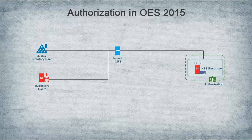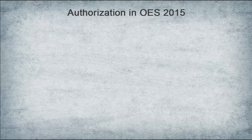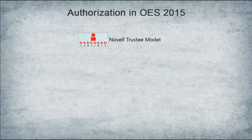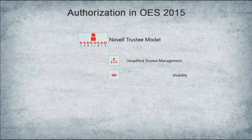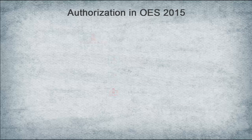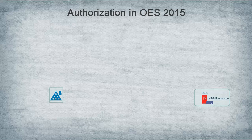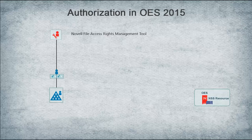OES 2015 support for NSS Active Directory trustees uses the same Novell trustee model that exists for the eDirectory trustees, to leverage features such as simplified trustee management, visibility, and inheritance support. Windows Active Directory administrators can manage the rights of Active Directory users or groups on NSS resources using a Windows-based shell extension called Novell File Access Rights Management Tool, also known as nfarm.